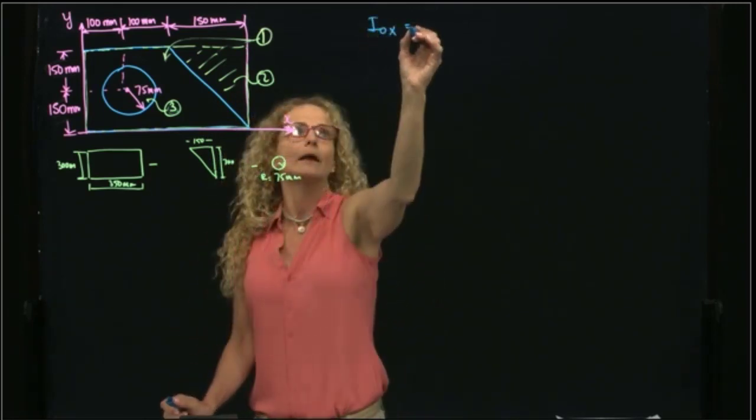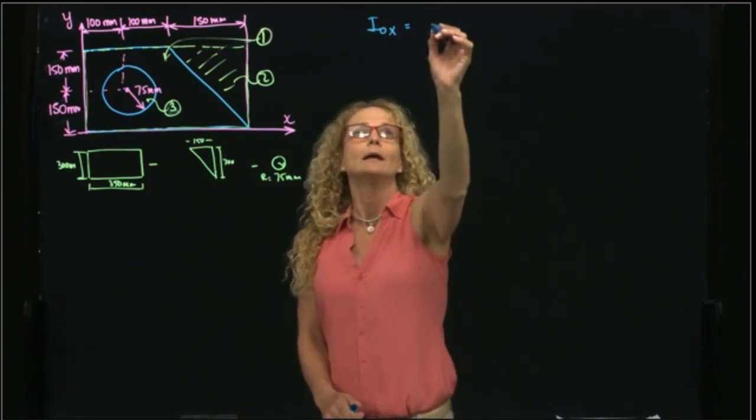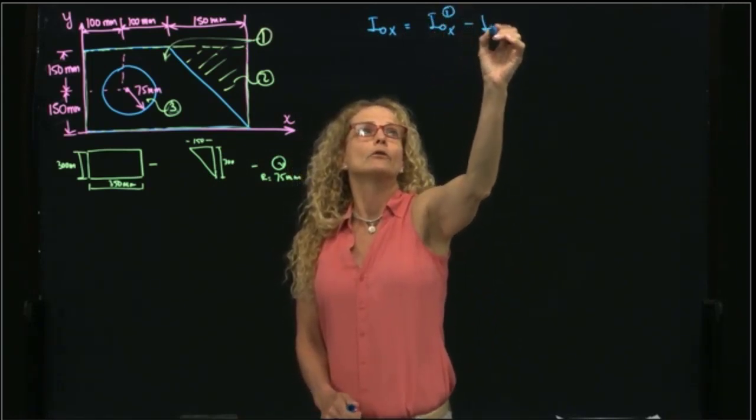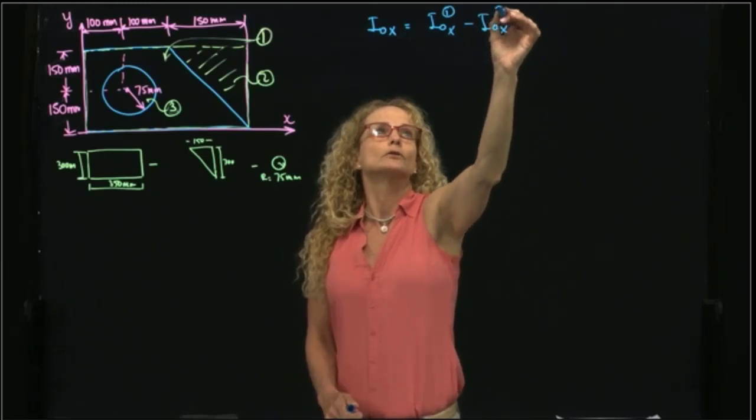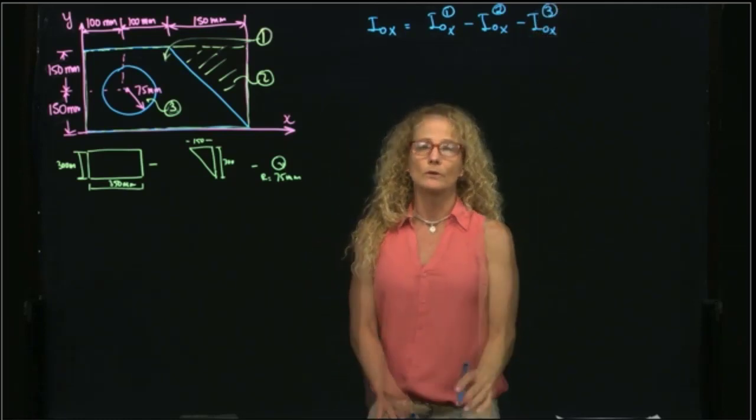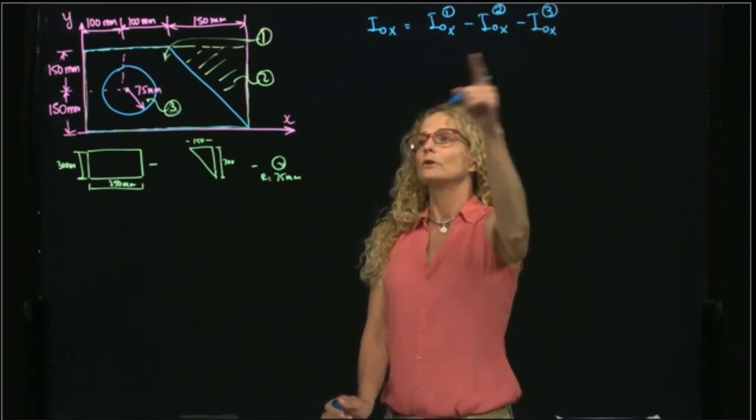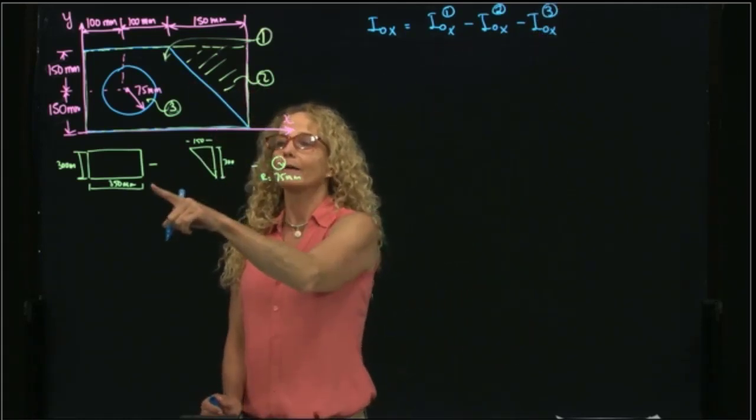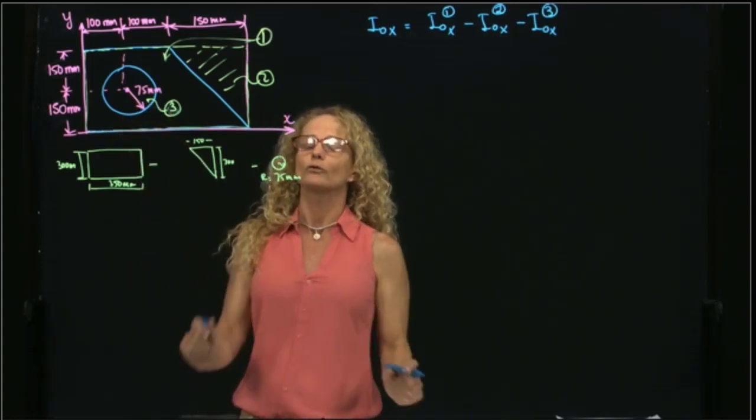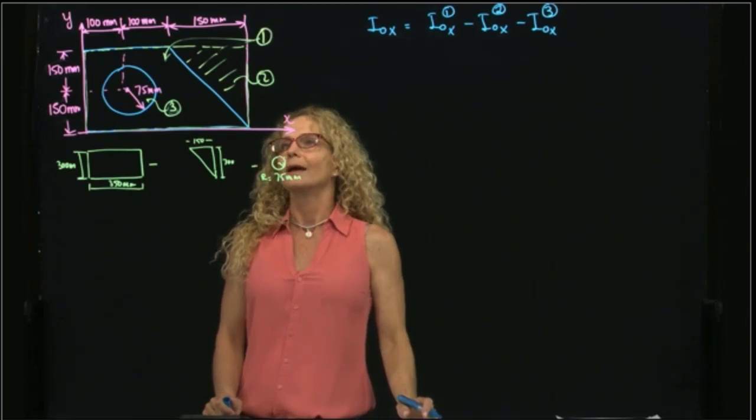So my area moment of inertia will be the figure 1 minus the moment of inertia of the figure 2, minus the moment of inertia of the figure 3. So I have to calculate the moment of inertia of each of those figures. And since I chose to use a bigger rectangle, I have to subtract the other two areas.